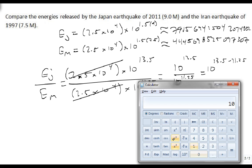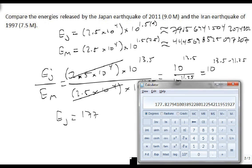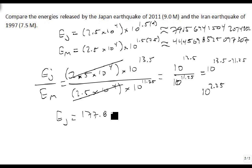So we come back down here, we raise this to the 2.25 power, and we get that EJ is equal to approximately 177.8 EM. The energy expended in Japan was almost 200 times more energy than was done in Iran. And so that's how we can compare energies by calculating them.